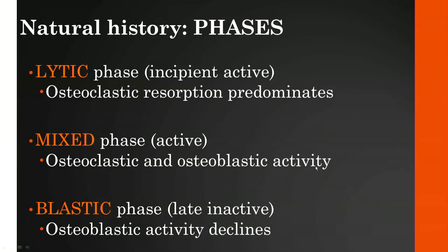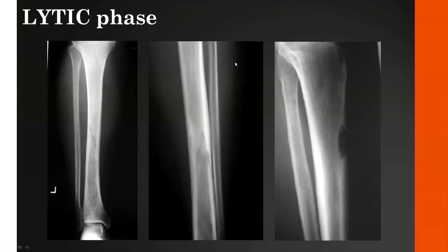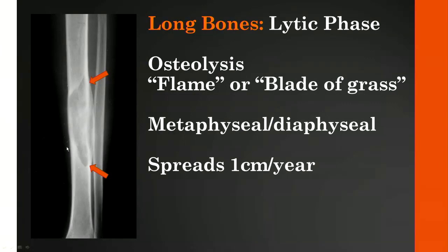Depending on the phase in which you encounter Paget's, the appearance will be different. In the long bones—here a frontal view of the tibia and a sagittal view—the lytic phase is ill-defined, diaphyseal or sometimes metaphyseal, with a characteristic flame-shaped or blade-of-grass margin. As the lytic phase progresses over time, it enlarges and spreads toward the end of bone at about one centimeter per year, beginning in the metaphysis or diaphysis and then extending distally.